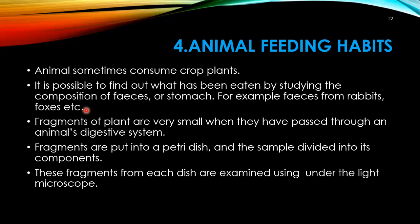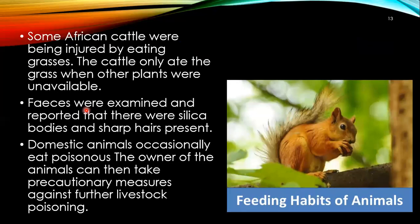Fragments of plant material are very small when they have passed through an animal's digestive system. Fragments are put into a petri dish and the sample is divided into its components, then examined under the light microscope. Some African cattle were being injured by eating grasses they only consumed when other plants were unavailable. Feces were examined and reported to contain silica bodies and sharp hairs of the poison plant. Domestic animals occasionally eat poisonous plants, and owners can then take precautionary measures against further livestock poisoning.